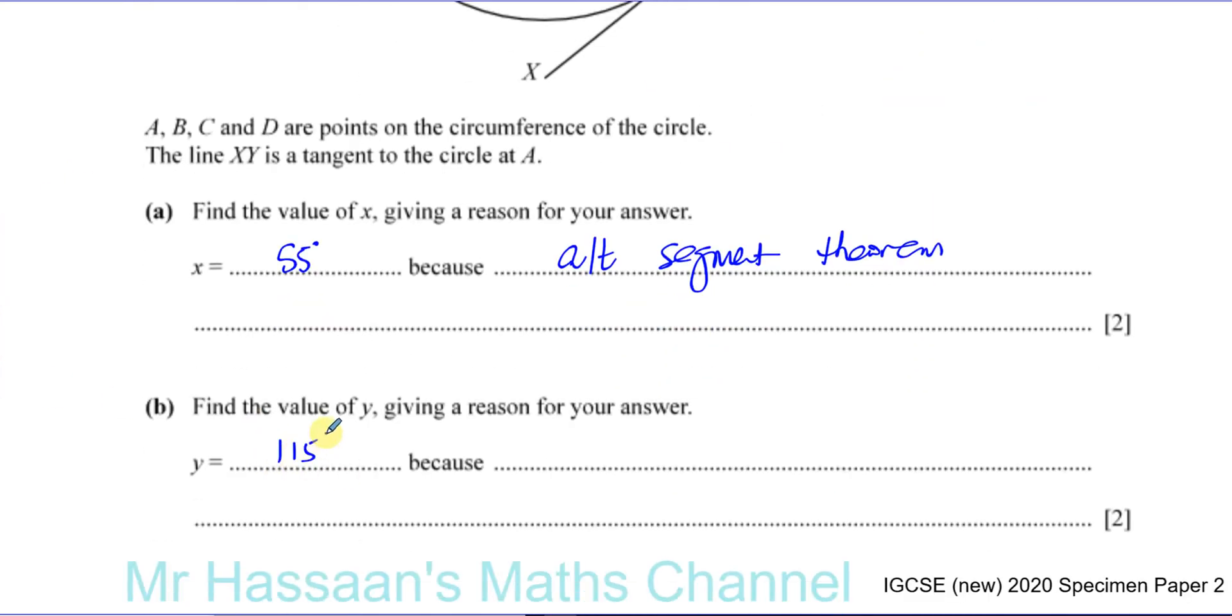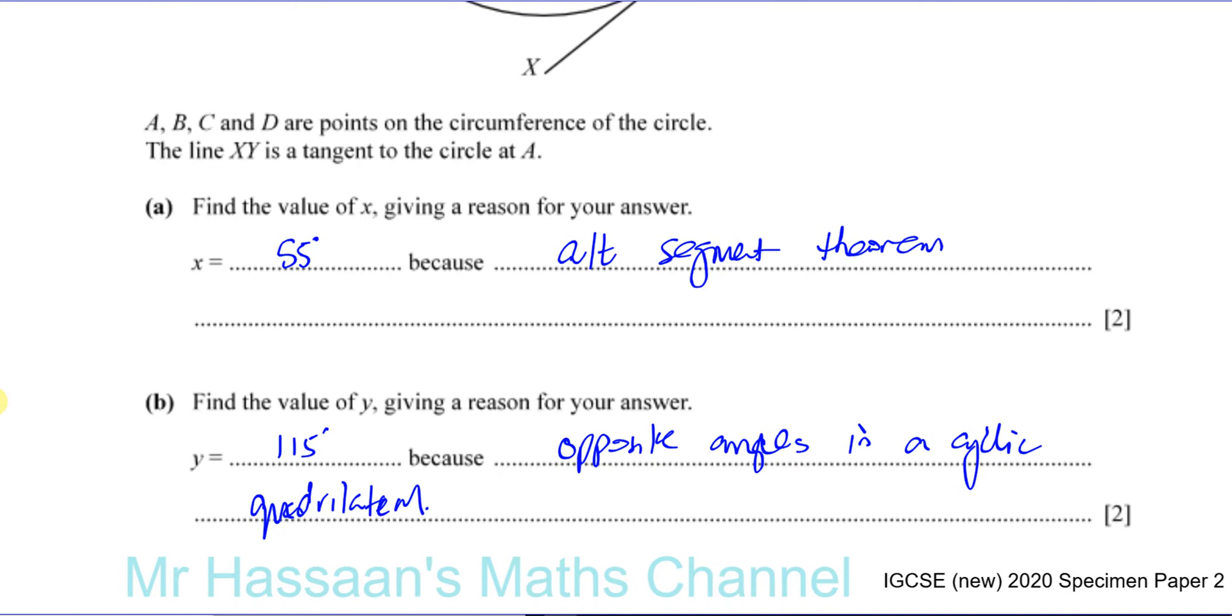So we can say Y is equal to 115 degrees. And you can say opposite angles in a cyclic quadrilateral. And that's perfectly fine. Cyclic quadrilateral. So opposite angles in a cyclic quadrilateral. That's perfectly fine.